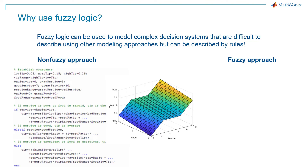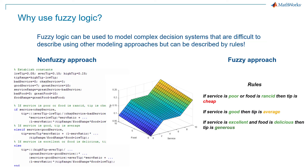On the other hand, with the fuzzy approach, you can formulate the same answer using simple linguistic rules, similar to how humans try to solve this problem. Even if you want to make modifications to the surface — say to make it smoother or make certain areas sharper — you can do that by just modifying the rules or by making a few changes to the range of values for each of the fuzzy parameters or fuzzy variables. This way, it is easy to modify, maintain, and understand fuzzy systems. This is where fuzzy logic adds value.